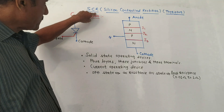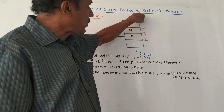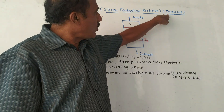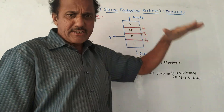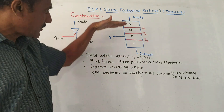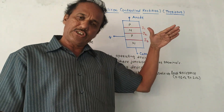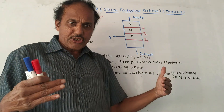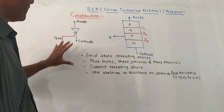The first part is SCR, that is silicon controlled rectifier. It is also called thyristor. In this session, we will discuss the construction of SCR, that is construction of thyristor, and the transistor model for the SCR.